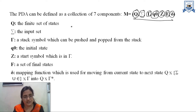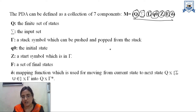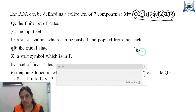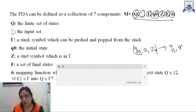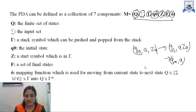All components are the same as in the deterministic pushdown automata. The only difference is in the mapping function — that is, the transition function. In NPDA, if we pass an input to a state, it may be possible to reach a number of states. For example, if we are on state q0 with input 'a' and stack symbol '0', we may move to q1 and at the same time remain on the same state. So in non-deterministic pushdown automata we can move to multiple states at a time.